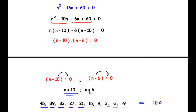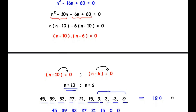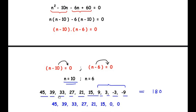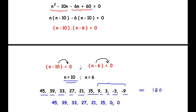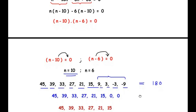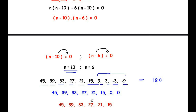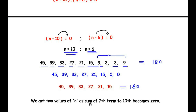For n = 6 we discard the last four values, because the sum of those four numbers is zero. The last four terms are 9, 3, −3, and −9: 9 + (−9) = 0 and 3 + (−3) = 0. So we only need the first six terms: 45, 39, 33, 27, 21, and 15. Adding these six numbers also gives a sum of 180, confirming n = 6. This is why n can be either 6 or 10 — the sum of the 7th through 10th terms is zero.